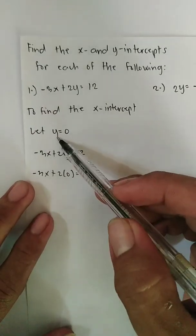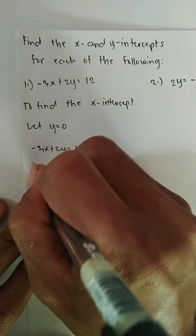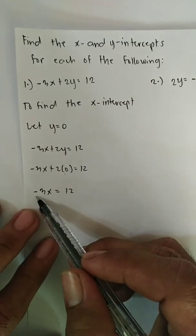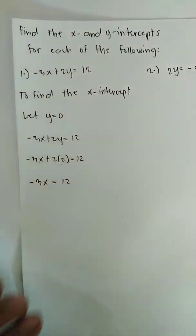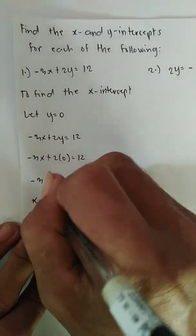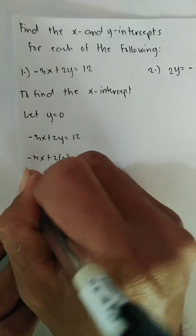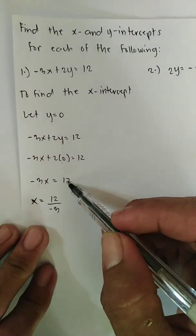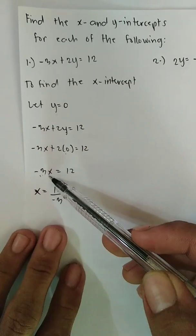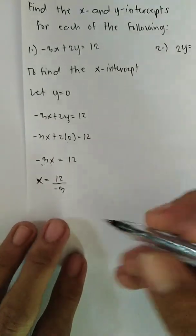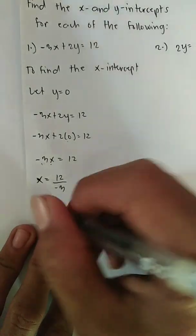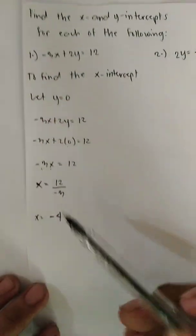Since 2 times 0 is 0, the remaining expression is negative 3x equals 12. To find the value of x, we divide: x equals 12 divided by negative 3. So our x-intercept is negative 4.